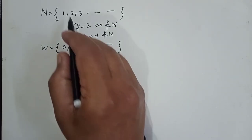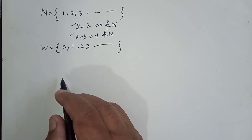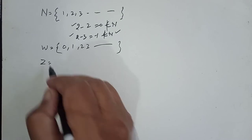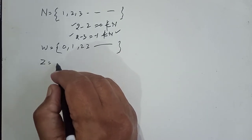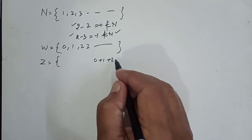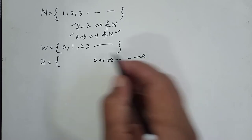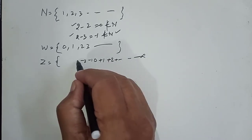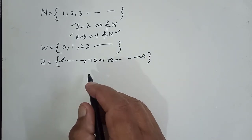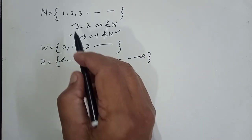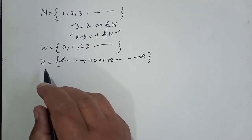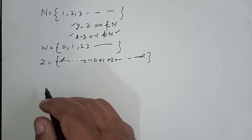We include zero here in natural numbers. Similarly, in order to avoid the second deficiency, we define Z as integers — the set of integers: 0, plus 1, plus 2, plus dot dot dot to infinity, minus 1, minus 2, dot dot dot up to minus infinity. So this is the set of integers. Simply put, we put plus and minus signs before the counting numbers. This is Z, which means the set of integers.